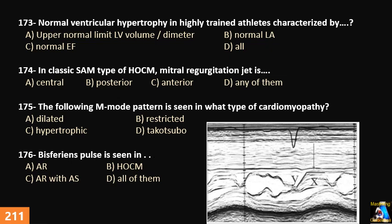Question 174: In classic SAM — systolic anterior motion of the mitral valve — in hypertrophic obstructive cardiomyopathy (HOKUM), the mitral regurgitation jet is — what is the direction? Question 175: The following M-mode pattern is seen in what type of cardiomyopathy?